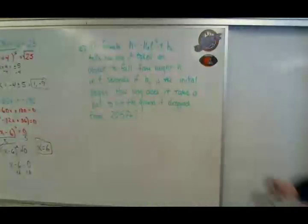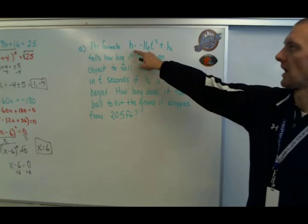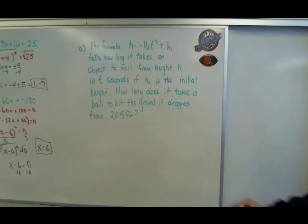Now for any of these, you can take those numbers, substitute them back in, and check and prove that they work. Final part of this, we're going to take and solve this word problem. So this is where you may actually apply this to a real life problem. It says the formula h = -16t² + h₀ tells how long it takes an object to fall from height h in t seconds. If h₀ is the initial height, how long does it take a ball to hit the ground if it's dropped from 205 feet?